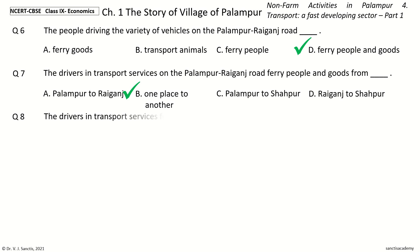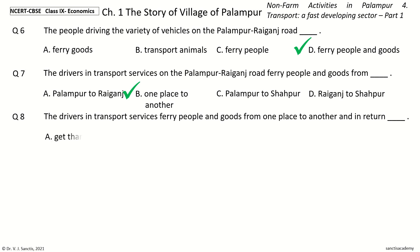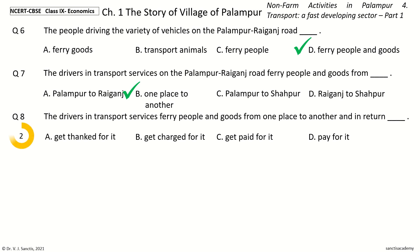Question 8: The drivers in the transport services ferry people and goods from one place to another, and in return dash. The options are: Get thanked for it, Get charged for it, Get paid for it, Pay for it. And the answer is Get paid for it. So, the drivers get paid for it.